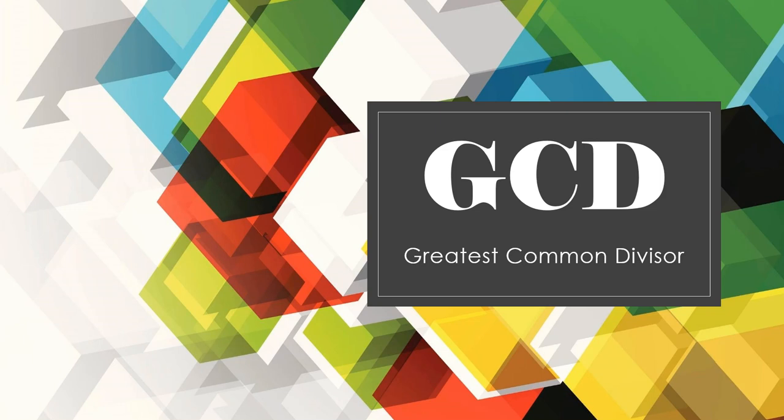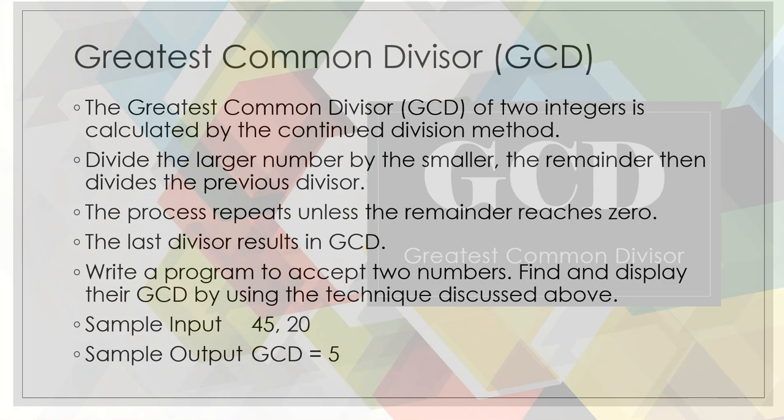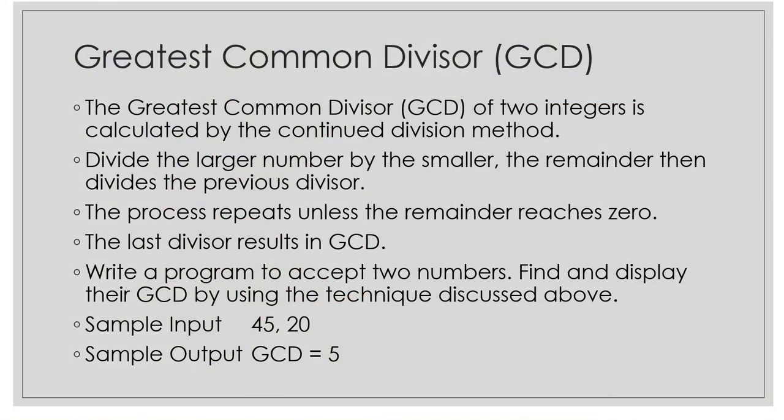Hello everyone. In this video we are going to see a program to find the greatest common divisor, that is GCD. You are going to accept two numbers and find the common divisor which divides both the numbers — the greatest number which divides both. The greatest common divisor, that is GCD, of two integers is calculated by the continued division method.